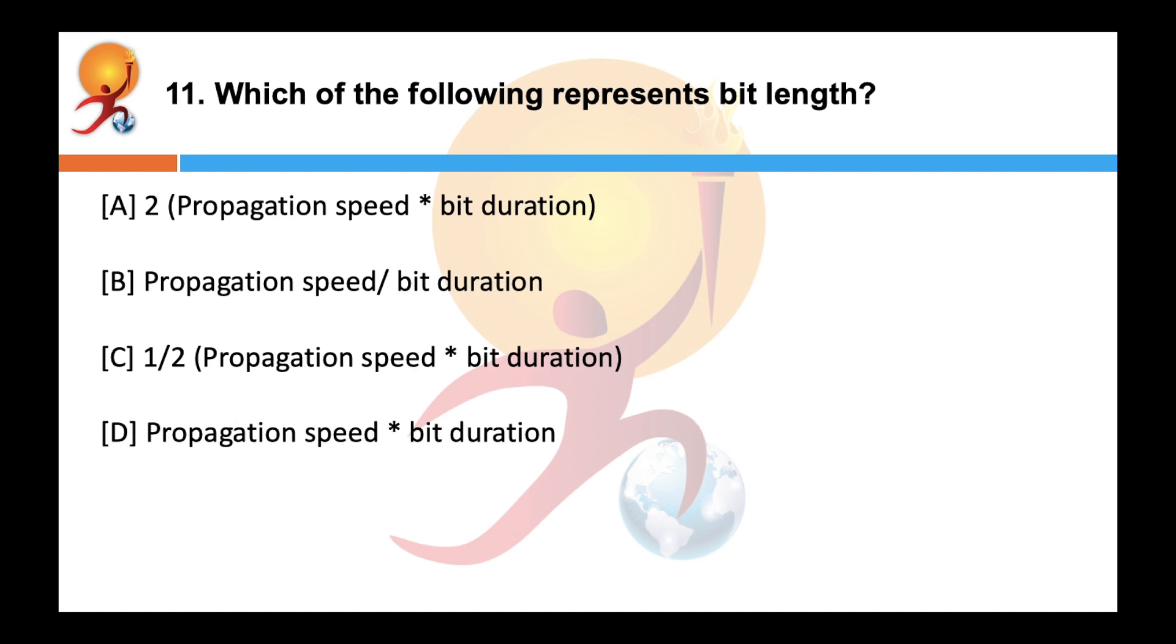Which of the following represents bit length? Correct answer is propagation speed multiplied by bit duration. Bit length is the distance one bit occupies on the transmission medium, and it is given by the formula propagation speed multiplied by bit duration.